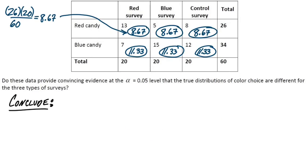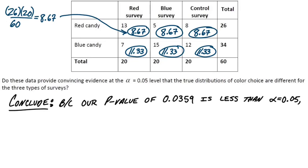Lastly, we just need to conclude. So our p-value is actually below that 0.05 level, so we have to mention why we're going to reject the null hypothesis. We can say because our p-value of 0.0359 is less than alpha, which is 0.05, we reject the null hypothesis.